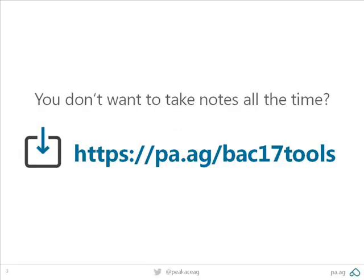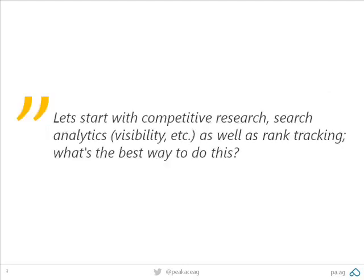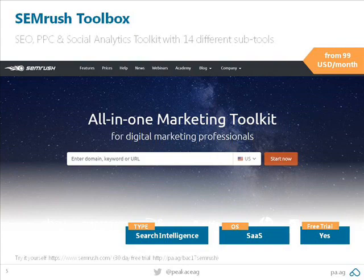Let's get started. First things first: what are we actually using today? Mainly coming from an SEO side of things - what are we using for competitive research, search analytics, visibility tracking, all of that? What's the favorite right now in search intelligence? One of the most obvious ones right now is SEMrush.